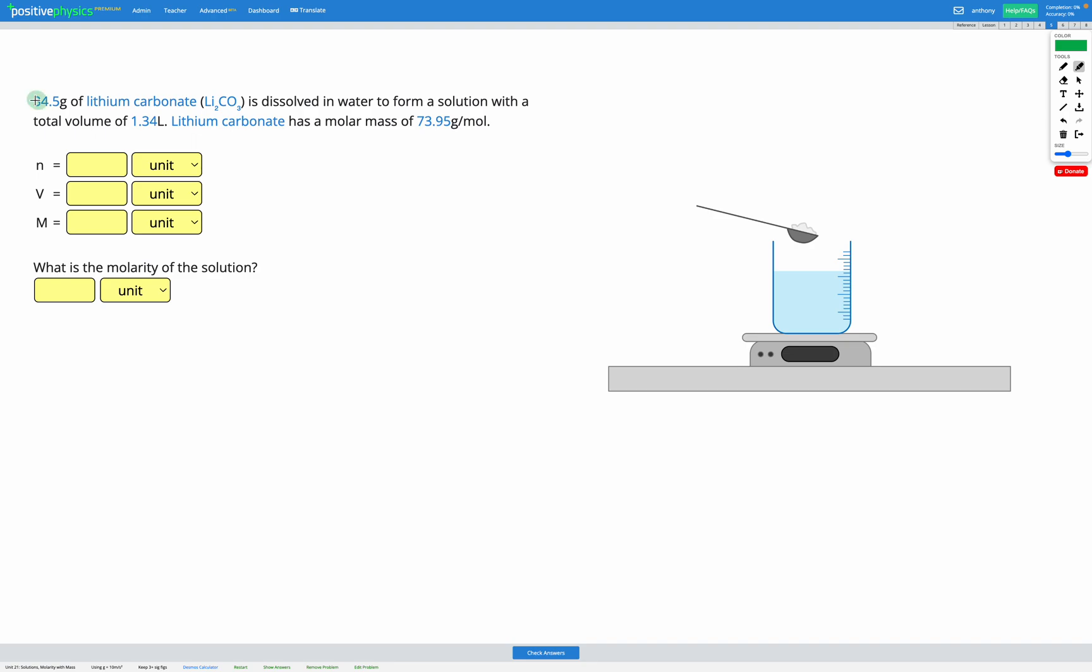In this question we have 34.5 grams of lithium carbonate, which has the formula Li2CO3. It's dissolved in water to form a solution with a total volume of 1.34 liters. We're also told the molar mass of lithium carbonate is 73.95 grams per mole.